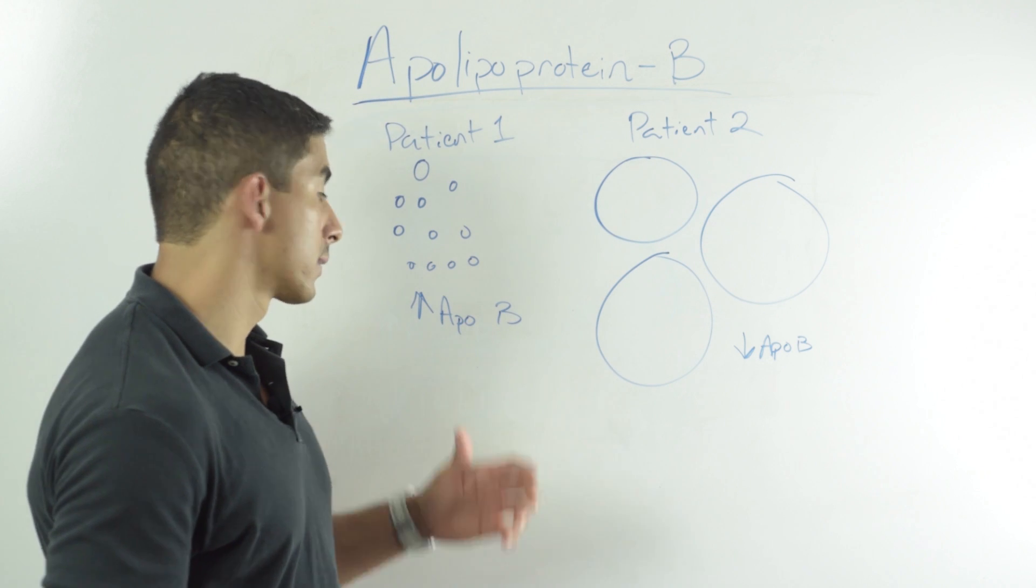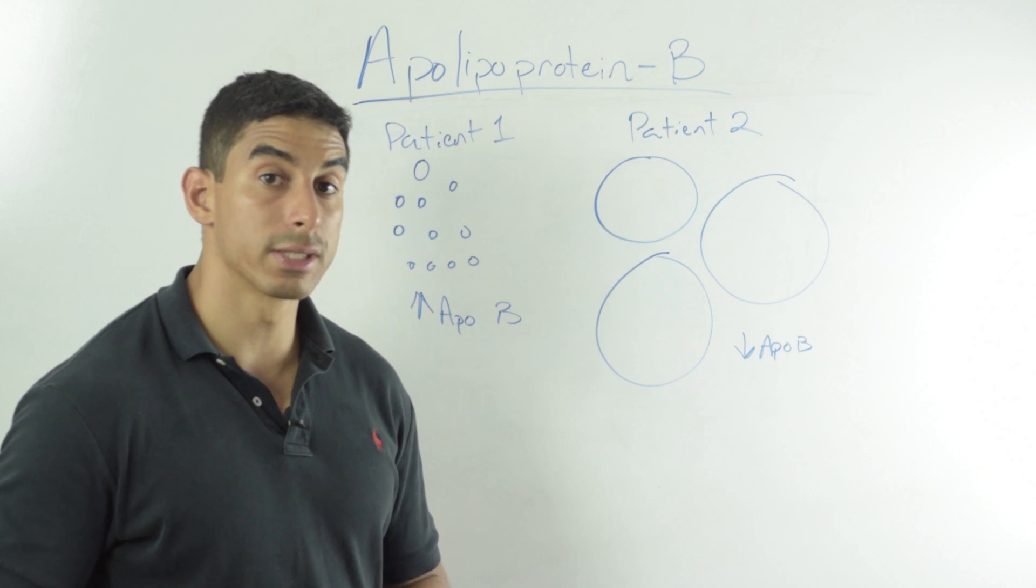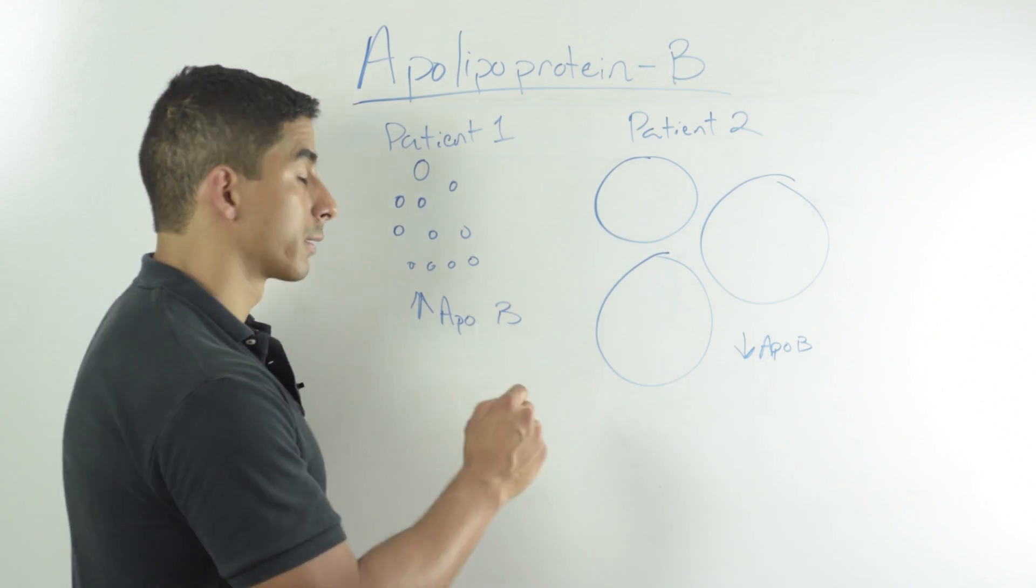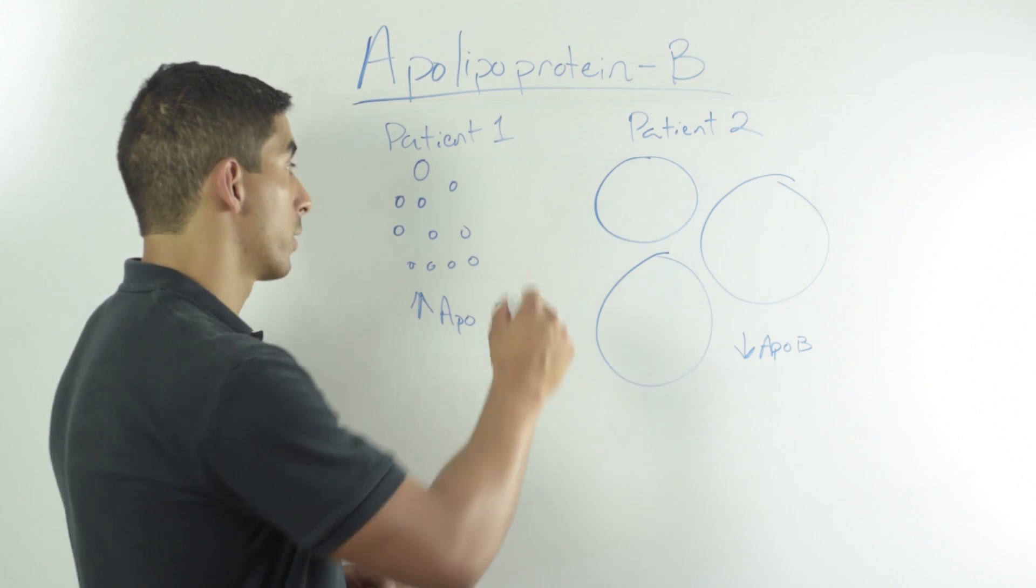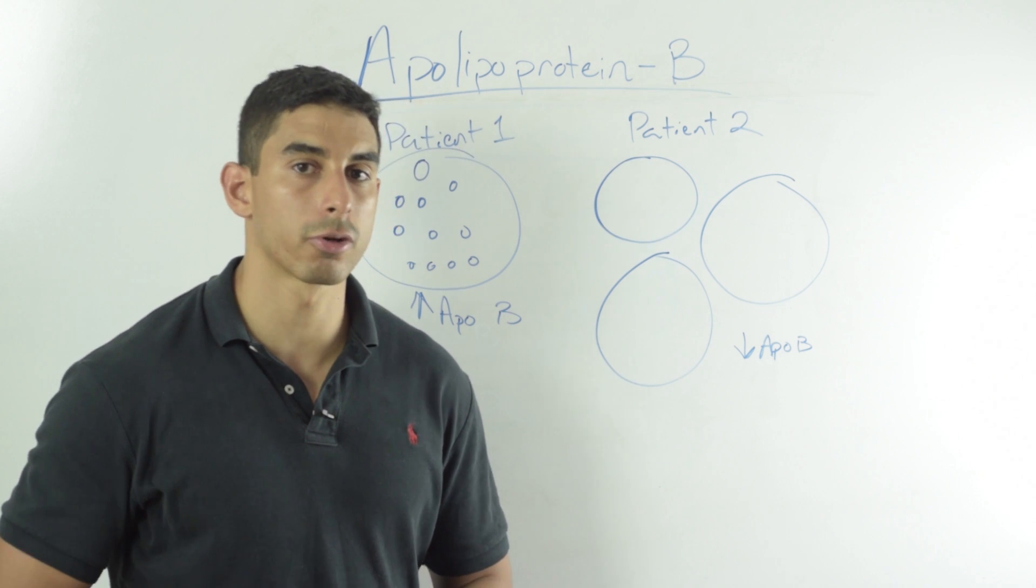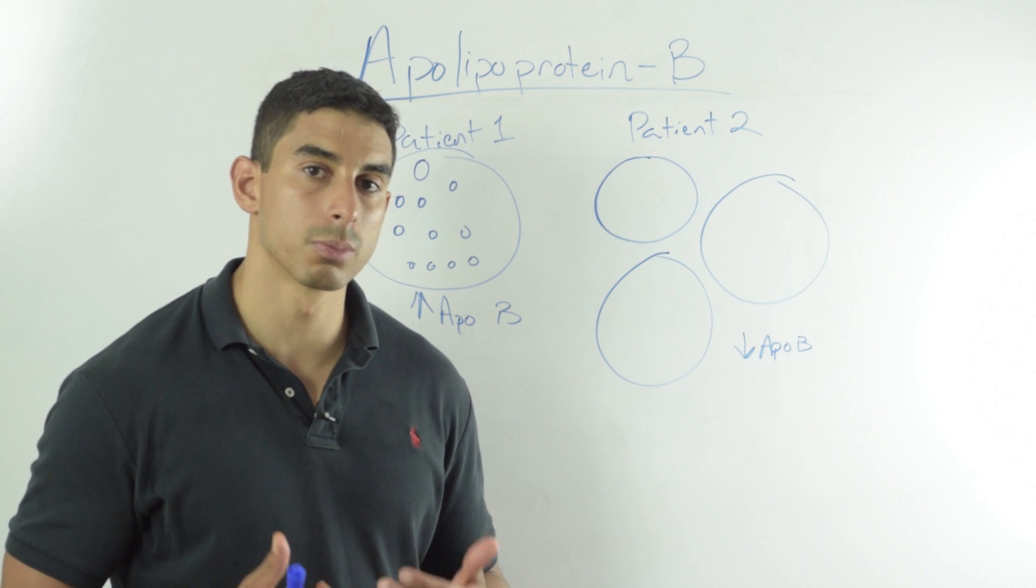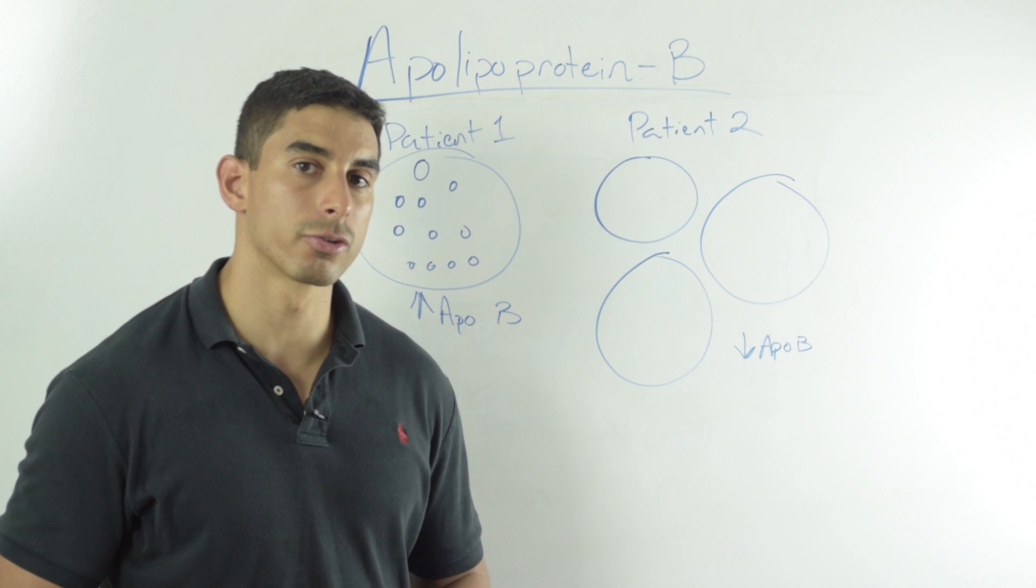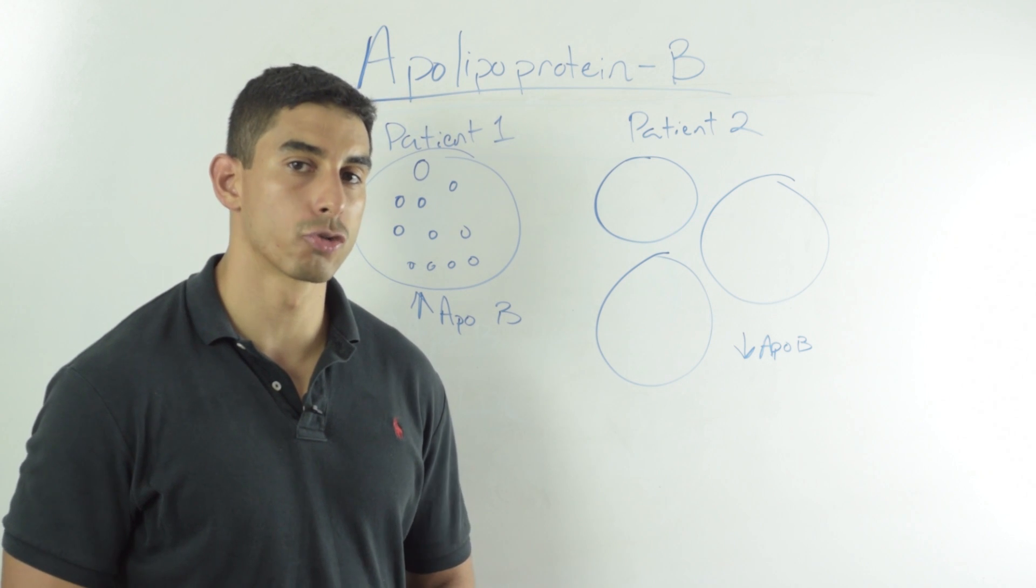This ApoB level is telling us, it's allowing us to identify the patients who have a high number of small LDL particles. Why is this important? Small dense LDL particles are the ones that are most likely to contribute to heart disease.